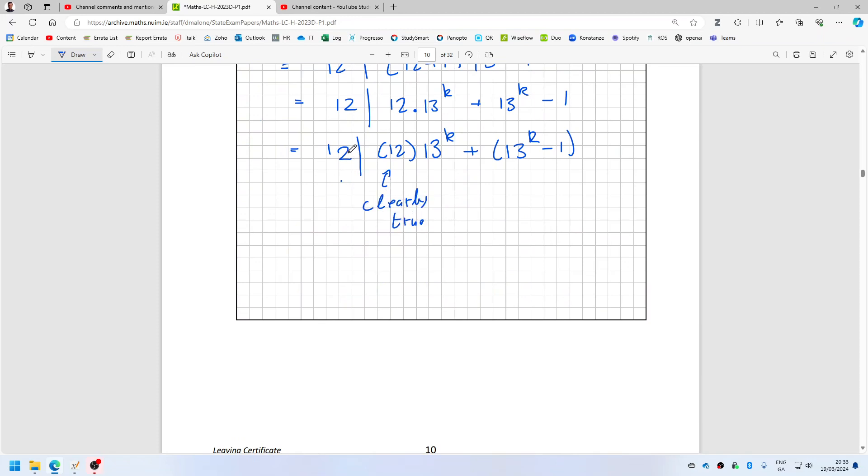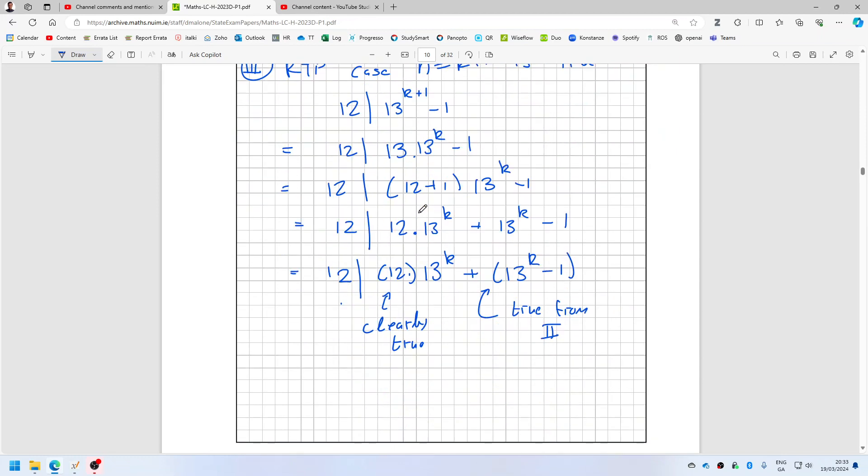Obviously you can divide 12 into 12 times 13 power k because this is a multiple of 12. And this one here is true from step two, the assumption in step two. So that ends the proof.